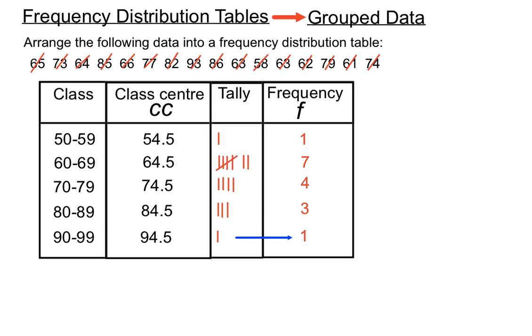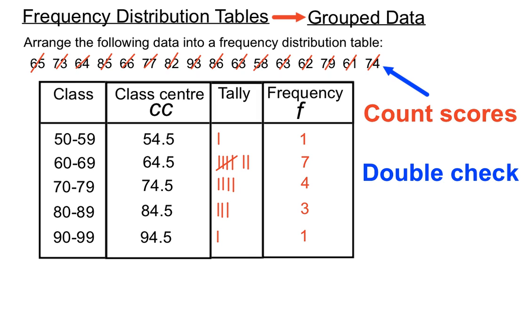So we think we're done. We'll just do a double check to make sure we haven't missed any scores. Crossing off the scores as we did at the top helps us a lot so we don't miss any. Just do things carefully one at a time. But there's a double check we can use. We'll add up the number of scores that we have and apparently there's 16 of them.